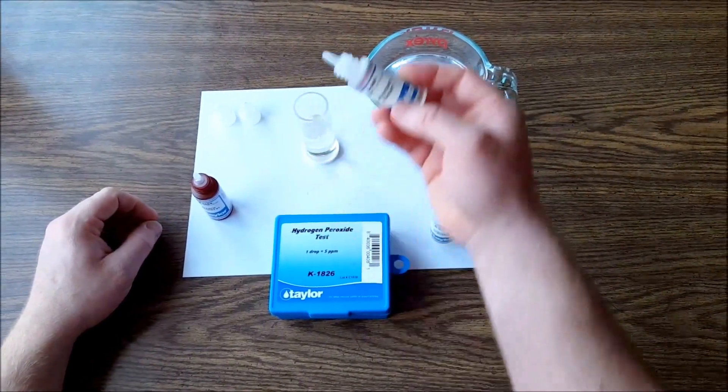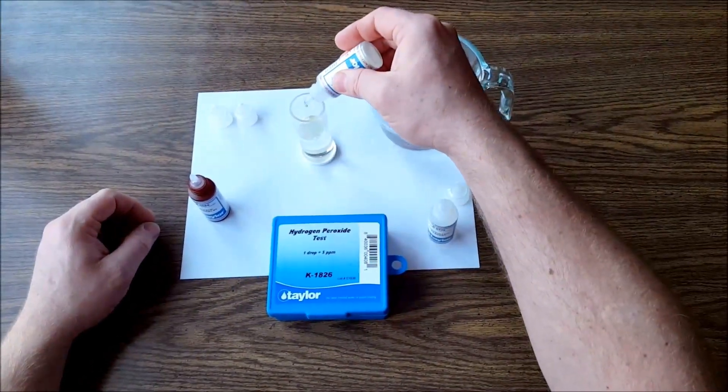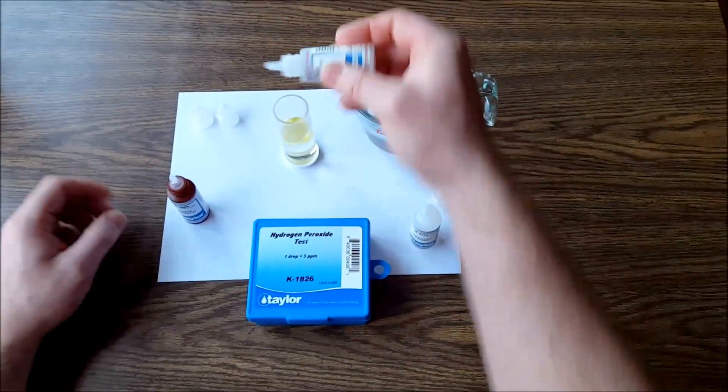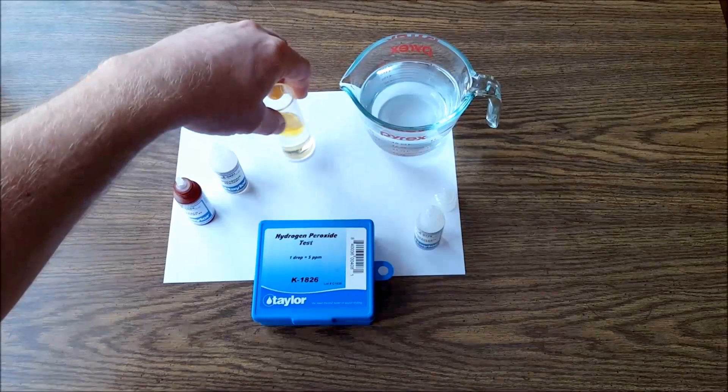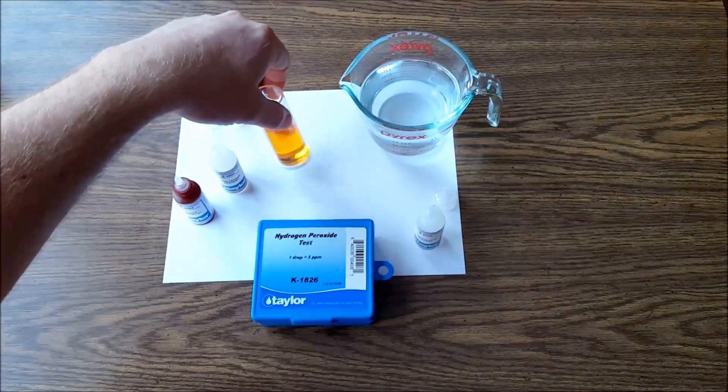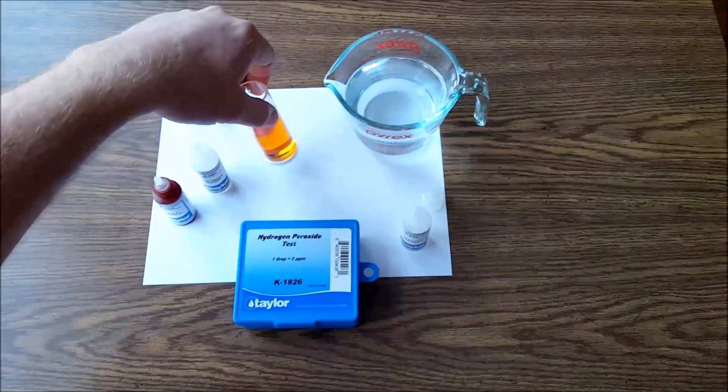And then your molybdate reagent—I have no idea if I'm saying that right—but nevertheless you put 10 drops in there: 1, 2, 3, 4, 5, 6, 7, 8, 9, 10. Now you'll see how it starts turning yellow, and that means that hydrogen peroxide is present inside of there. So you give it a good swirl and make sure it's all uniform in color.